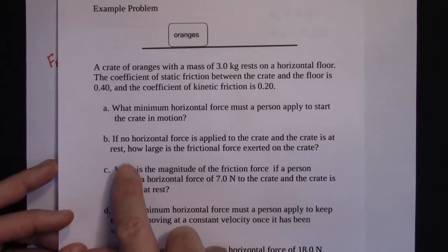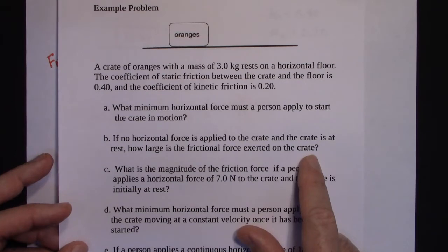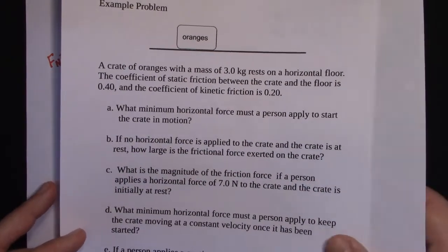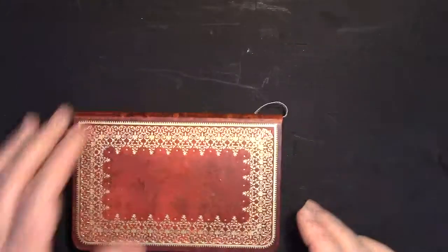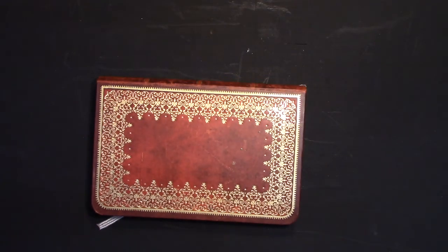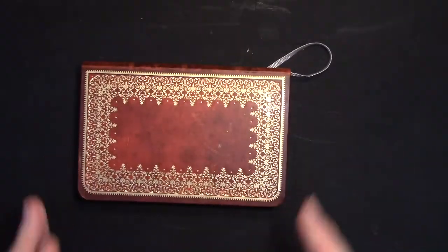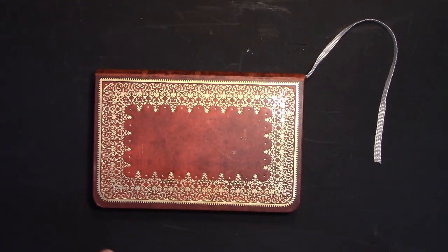Part two: if no horizontal force is applied to the crate and it's at rest, how large is the frictional force? You might think it's 12 newtons, but if the crate is just sitting there with nothing pushing it horizontally, there's no friction force. If there were a friction force in one direction with nothing applied, the crate would accelerate that way on its own — which it doesn't. So the frictional force is zero.